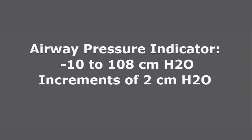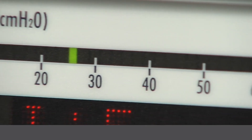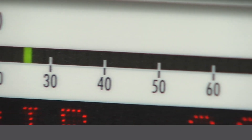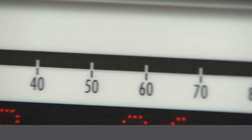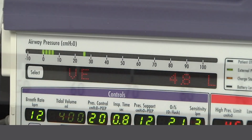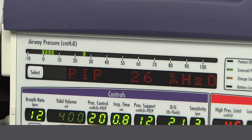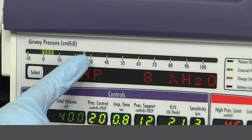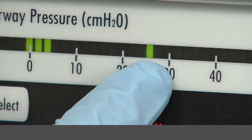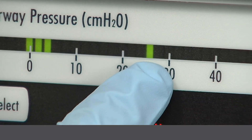This bar graph manometer displays the real-time airway pressure. The displayed pressures range from minus 10 to 108 centimeters in increments of 2 centimeters. You will see a single LED is lit, showing the peak inspiratory pressure of the previous breath.